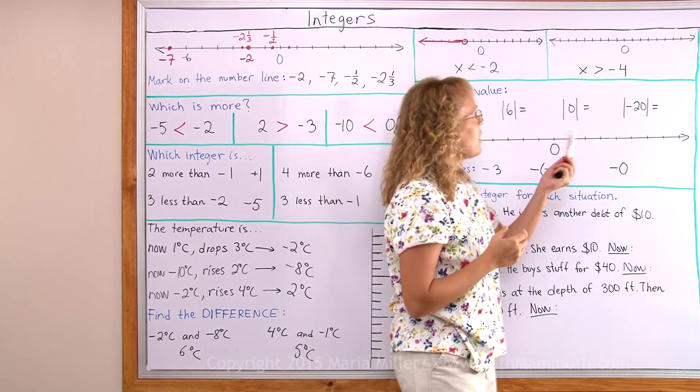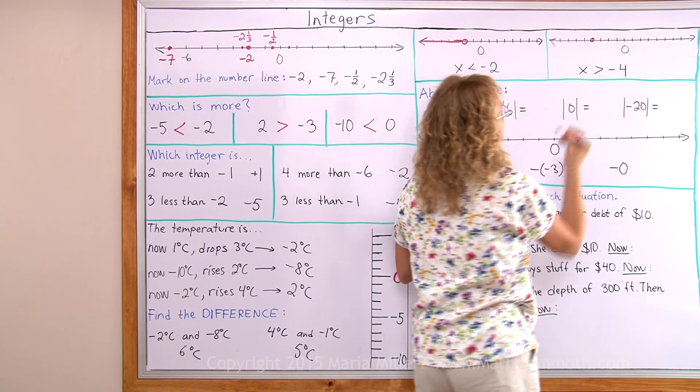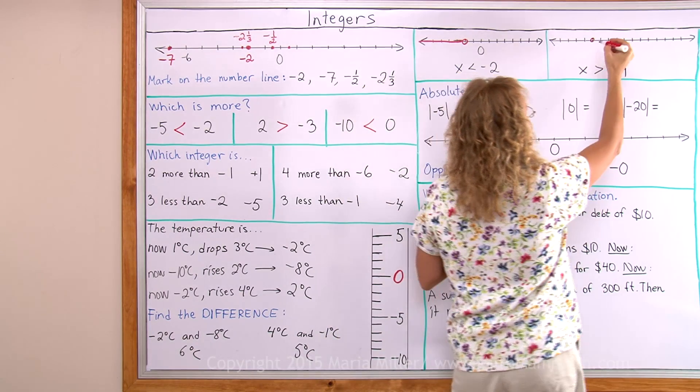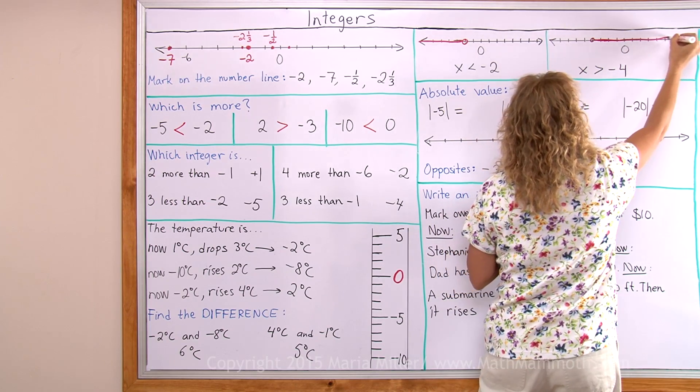x is greater than negative 4. I will find negative 4 first. And anything greater than that. Anything that is a better situation or money-wise so to speak. So it is these numbers here. Either less negative or just any positive number here.